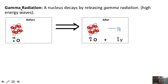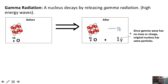The last type of radiation is gamma radiation, which occurs when a nucleus releases gamma rays. We can see that happening here — we have the same oxygen nucleus releasing a gamma ray. Since the gamma ray, represented by the Greek letter gamma, has no mass or charge, our original nucleus retains its same particles.